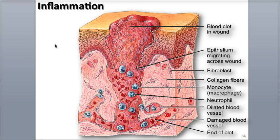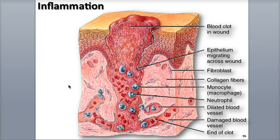In the second phase, the migratory phase, the blood clot forms into a dried scab, and the epithelial cells migrate underneath to bind the wound. Fibroblasts begin secreting scar tissue, which consists of collagen fibers, and blood vessels severed by the wound start to regrow. All of the tissue that is now filling up the wound is called granulation tissue.